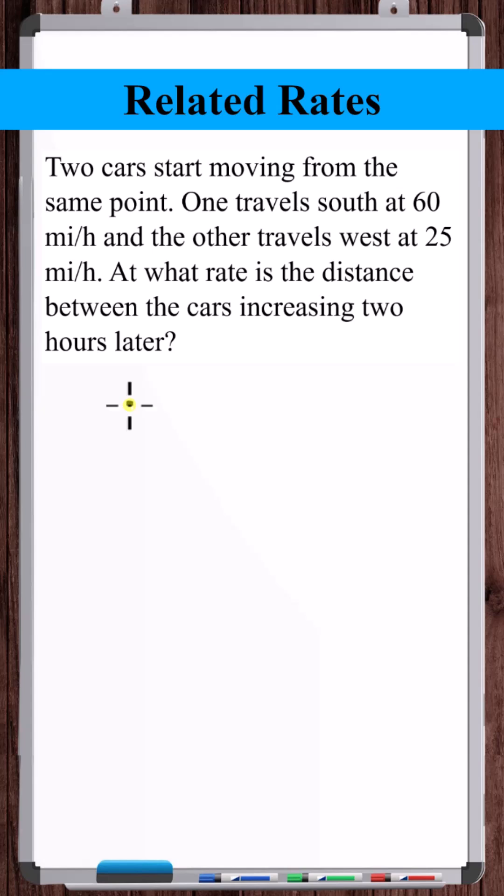So they start from the same point. One travels south and the other travels west. We'll make this a little shorter than the south line since the speed is less, but it really doesn't matter. And here's the distance between the two cars.